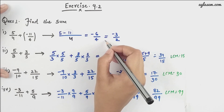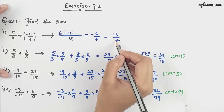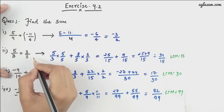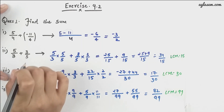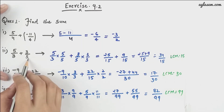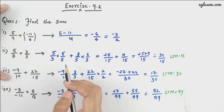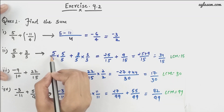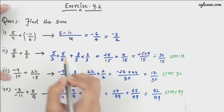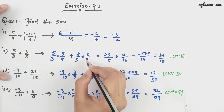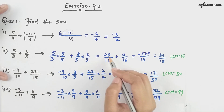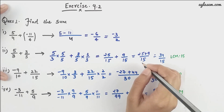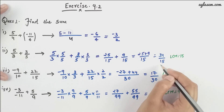Moving further, we have 5/3 plus 3/5. We need to convert to the same denominator. Multiplying: (5/3 × 5/5) + (3/5 × 3/3) gives us 25/15 plus 9/15, and from there we have 34/15.